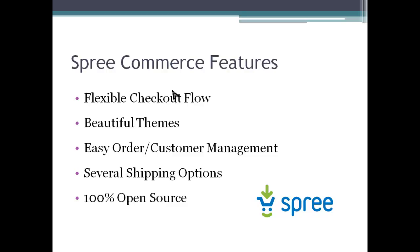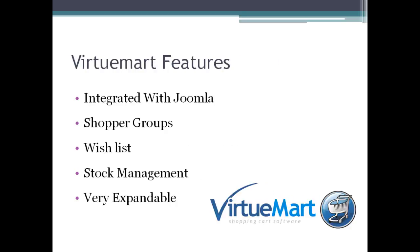Next is Spree Commerce, which is based on Ruby on Rails as opposed to the other platforms that are PHP-based. It has a very flexible checkout flow — I really like how smooth the checkout process is, similar to PrestaShop in many ways. It has really beautiful themes, though there aren't as many as PrestaShop or Magento. Customer management and order tracking are pretty easy, there are several shipping options, over 50 payment plugins including PayPal and Authorize.net, and it's 100% open source.